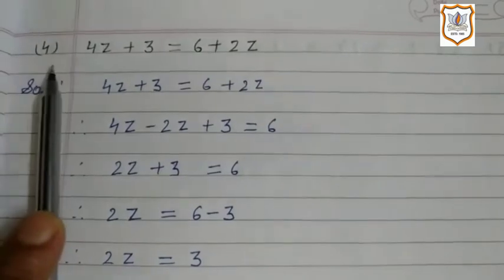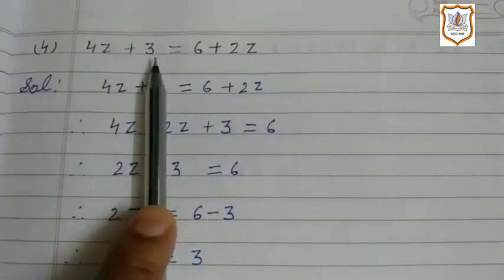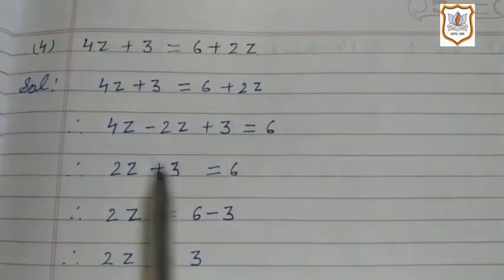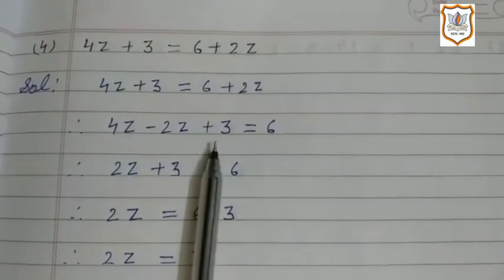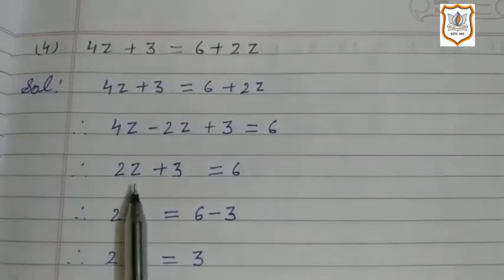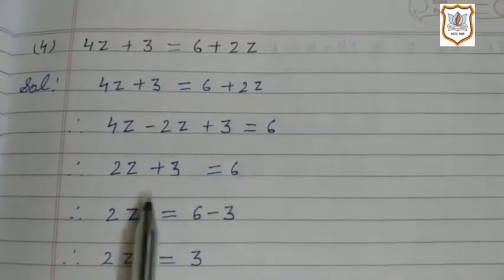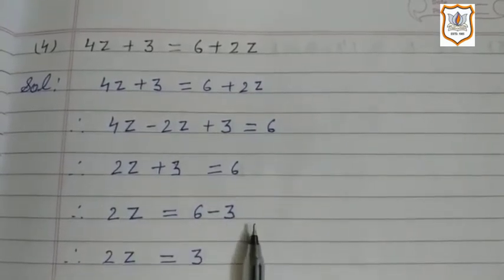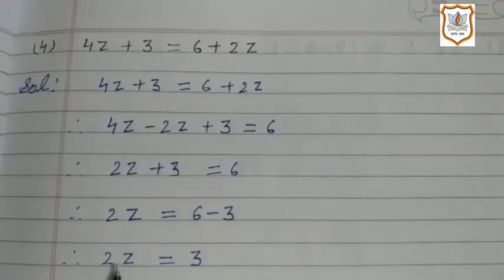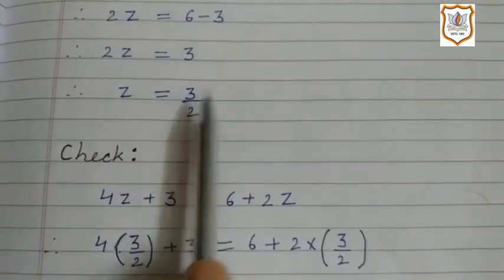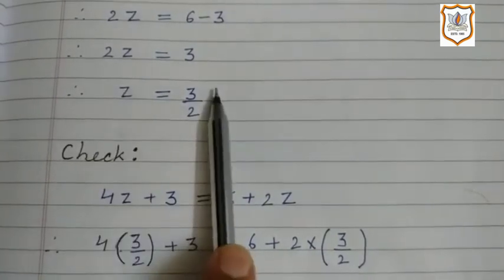Now we solve the next equation: 4z + 3 = 6 + 2z. We shift 2z to the left side. So 4z minus 2z + 3 = 6. 4z minus 2z is 2z. So 2z + 3 = 6. Now we shift 3 to the right side: 2z = 6 minus 3 = 3. We shift 2 to the right side: z = 3 upon 2. So the value of z is 3/2.